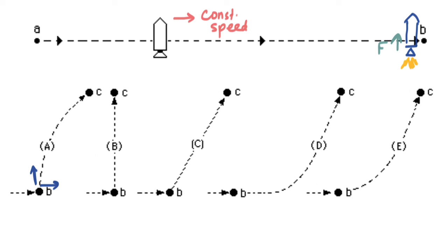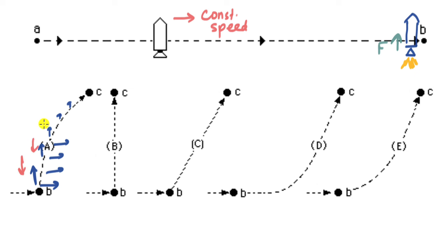Because the rocket is moving at a certain angle, there must be both a vertical velocity and a horizontal velocity. We know it's moving to the right, and the engine provides some vertical velocity. But looking at Option A's path, the vertical velocity is constantly decreasing — the path becomes more and more horizontal. If vertical velocity is decreasing, there must be a downward acceleration, which would require a downward force. But the force is actually upward, so Option A is wrong.